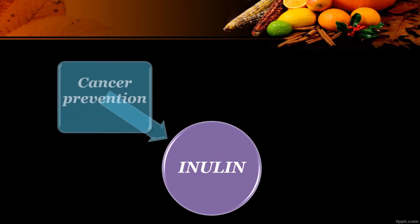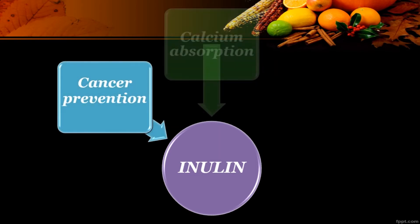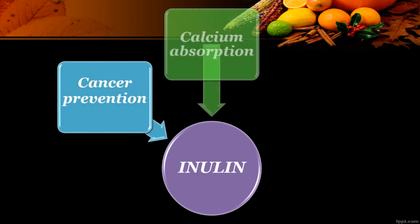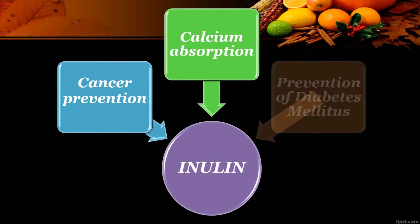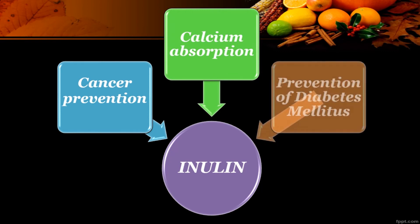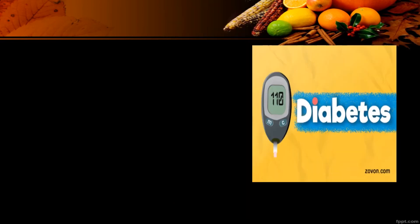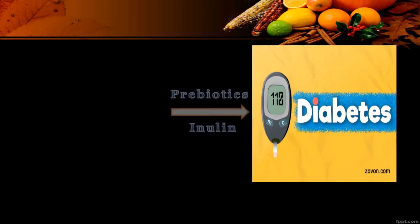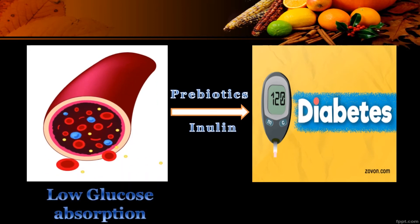Adding enough inulin to your diet will absorb calcium in a better way. Inulin not only plays a major role in preventing cancer and absorbing calcium, but also involves in the prevention of a metabolic disorder, namely diabetes mellitus. Prebiotic fiber such as inulin slows down the absorption of glucose at the post-prandial stage, thereby being beneficial for diabetic individuals.